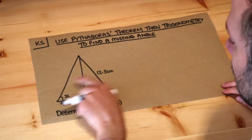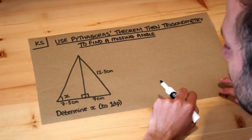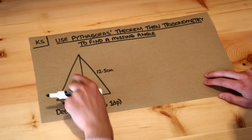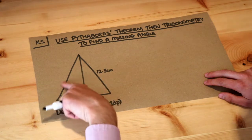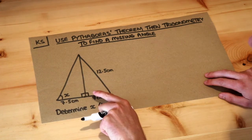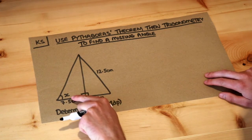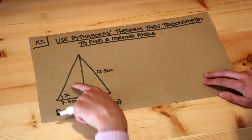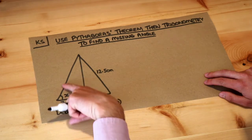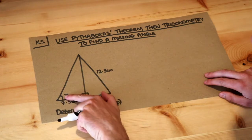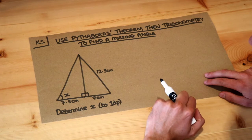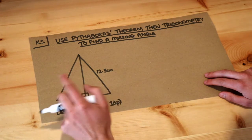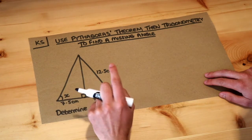Let's look at these two triangles we have here. We're trying to find this angle x. The problem is we don't have enough information to work out the angle x from the left triangle alone. We would need to know two of the sides of this triangle to use trigonometry and find angle x, but we've only got one of the sides.